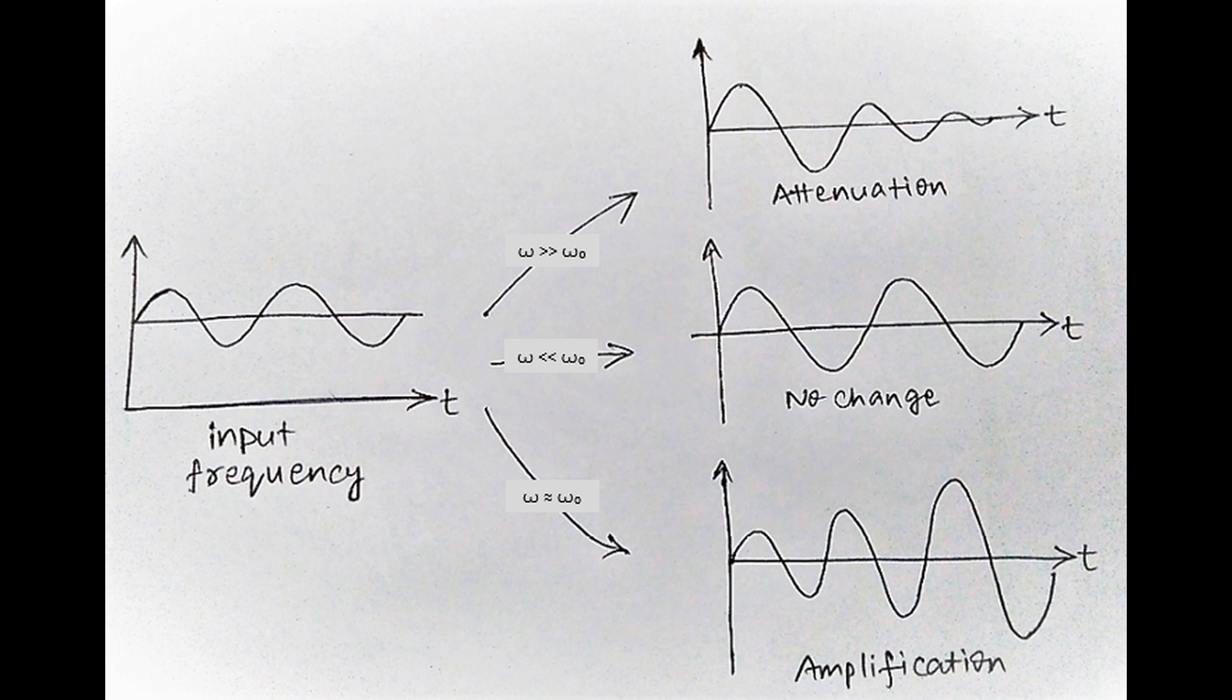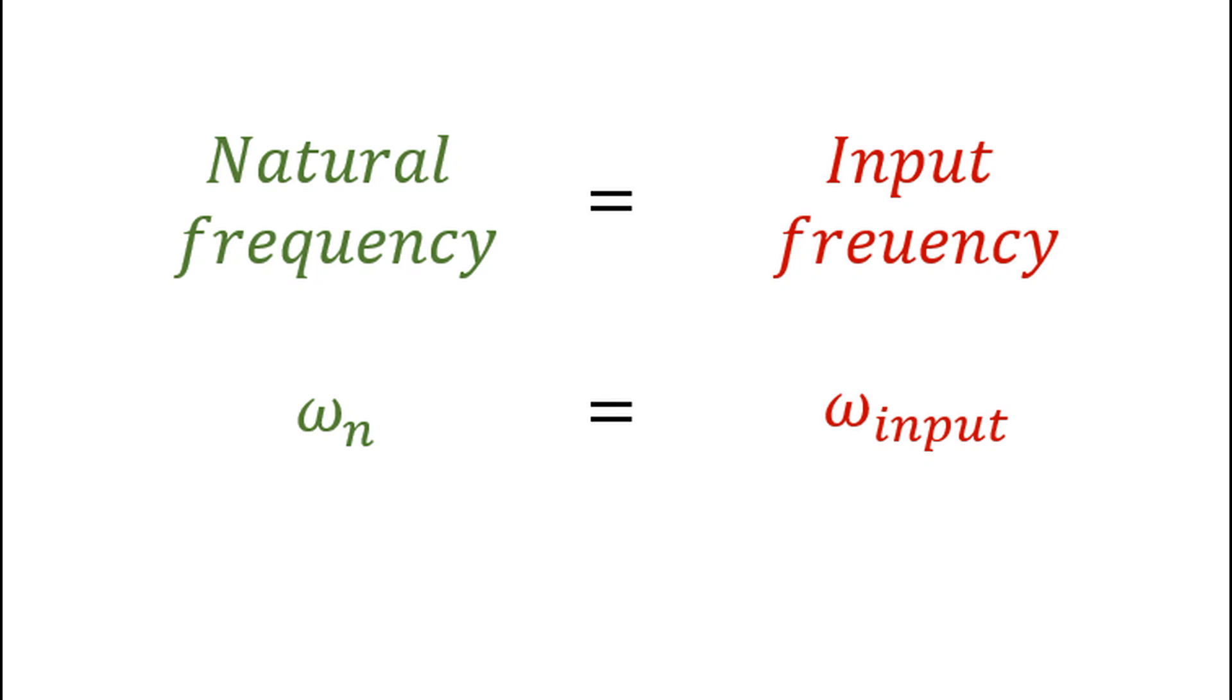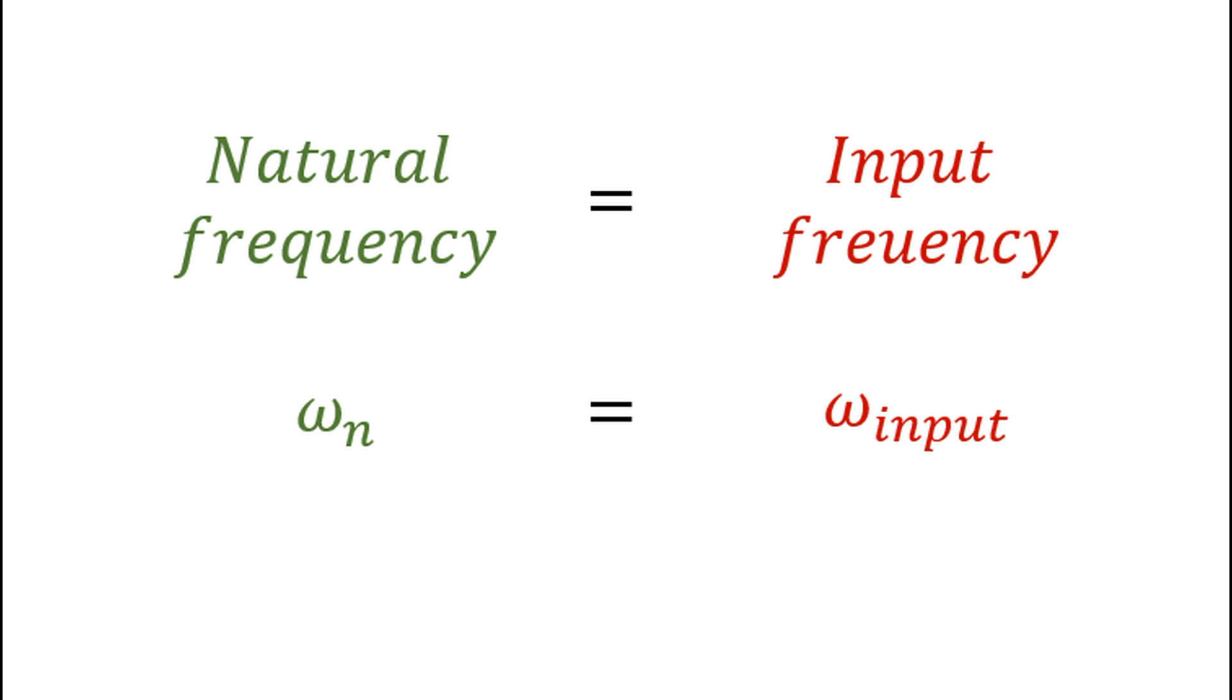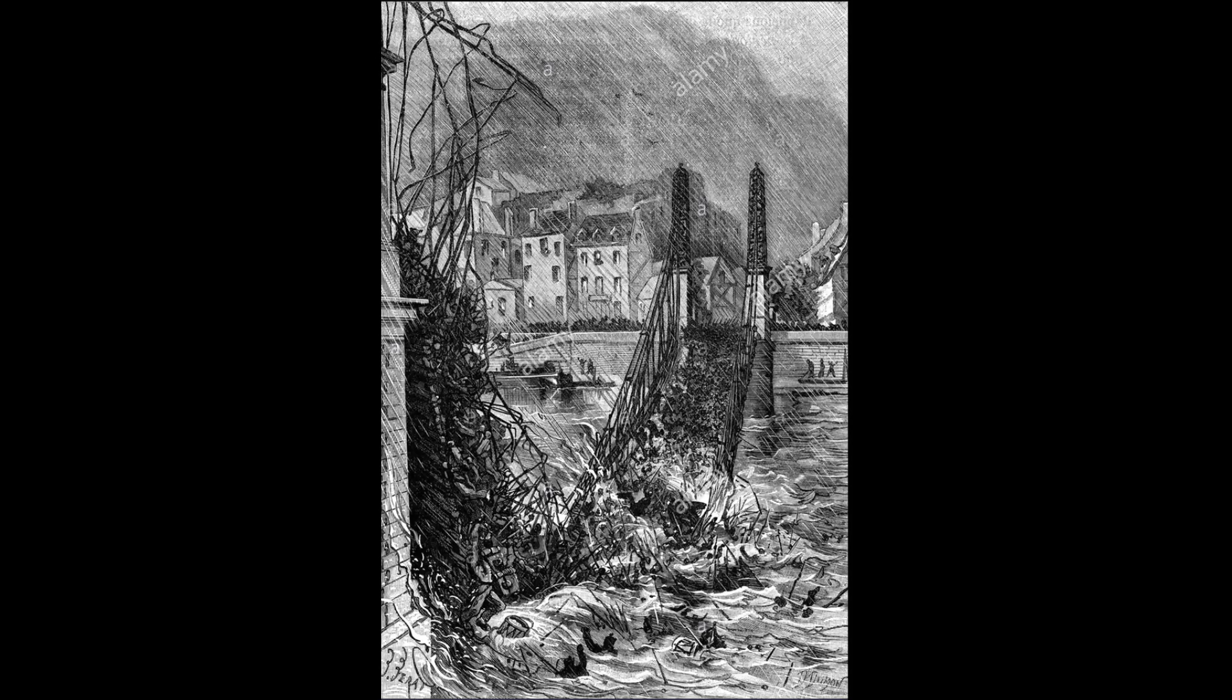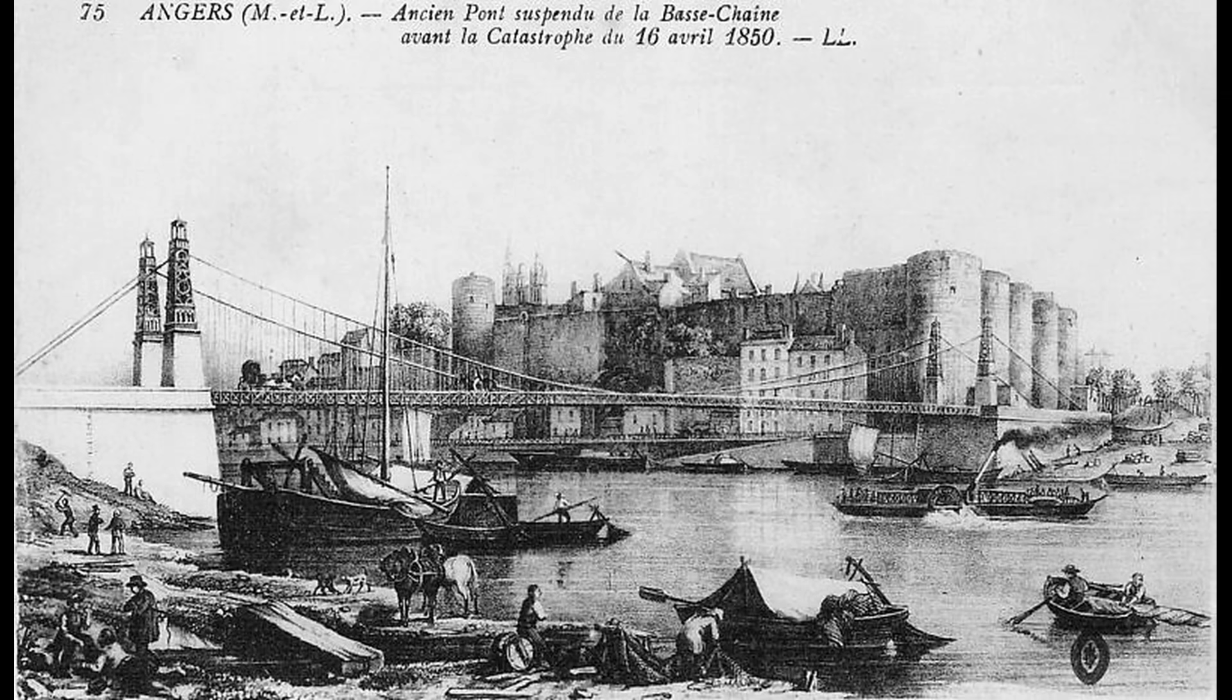So for resonance to occur, the external frequency should be equal to the natural frequency. Now, Onge Bridge experienced a powerful thunderstorm which caused it to sway. The soldiers' march matched with the same cadence which contributed to the structure then oscillating at its resonance frequency and its ultimate collapse.